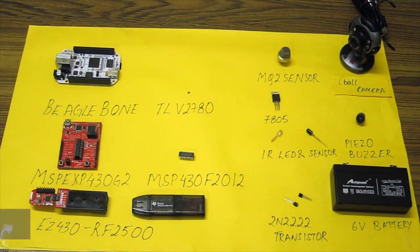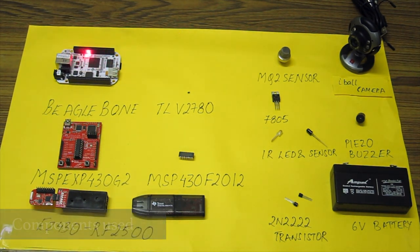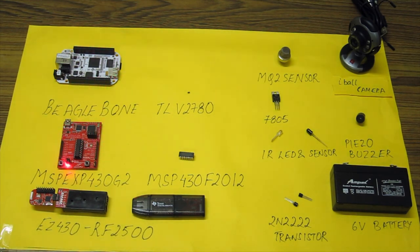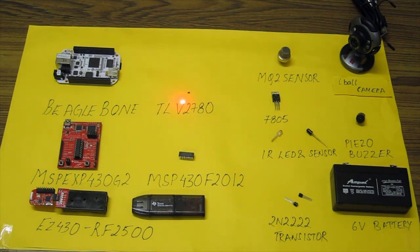Proceeding further, these are the devices that have been used in this project. This is BeagleBone — it is a low cost, credit card sized computer. This is the MSP-EXP430G2 LaunchPad, which is an easy to use flash programmer and debugging tool. This is EZ430-RF2500, a complete wireless development tool that includes a USB powered emulator and two 2.4 GHz wireless target boards. This is TLV2780, a single supply operational amplifier, and this is the MSP430F2012, a mixed signal microcontroller.